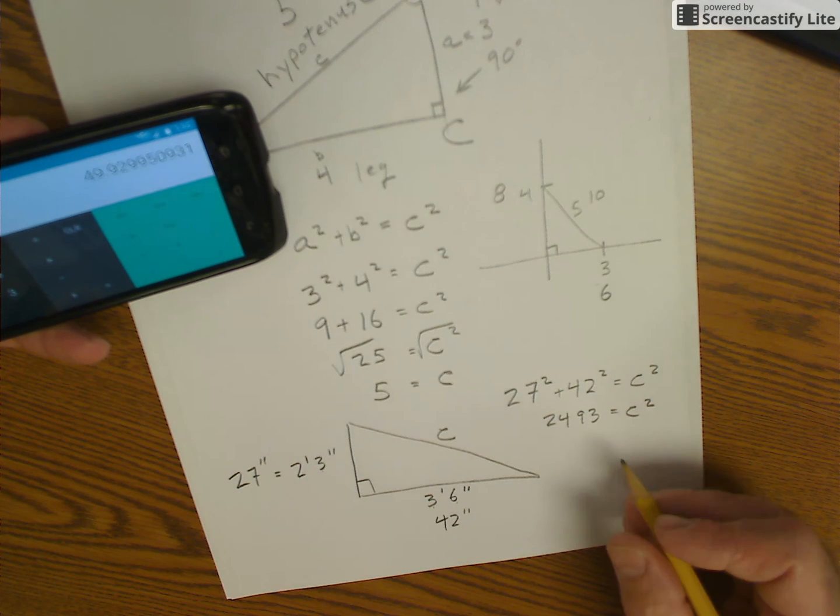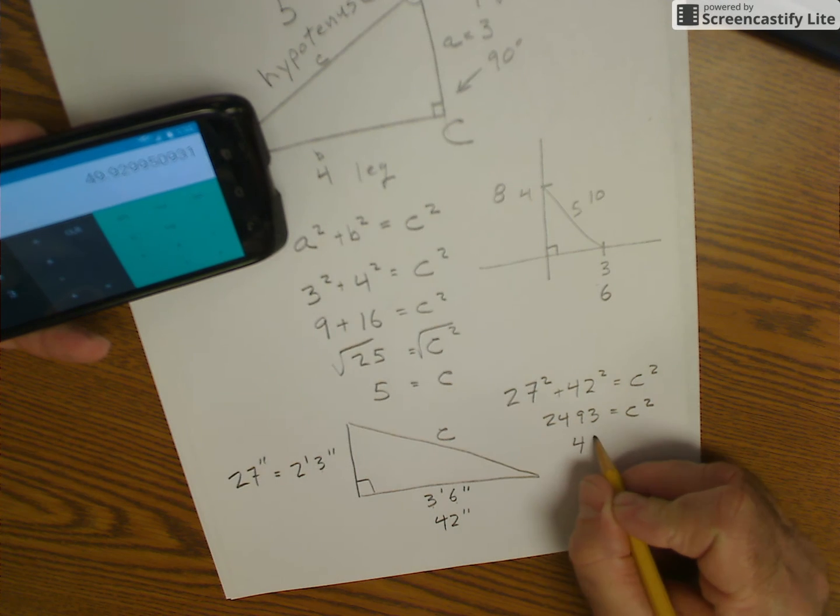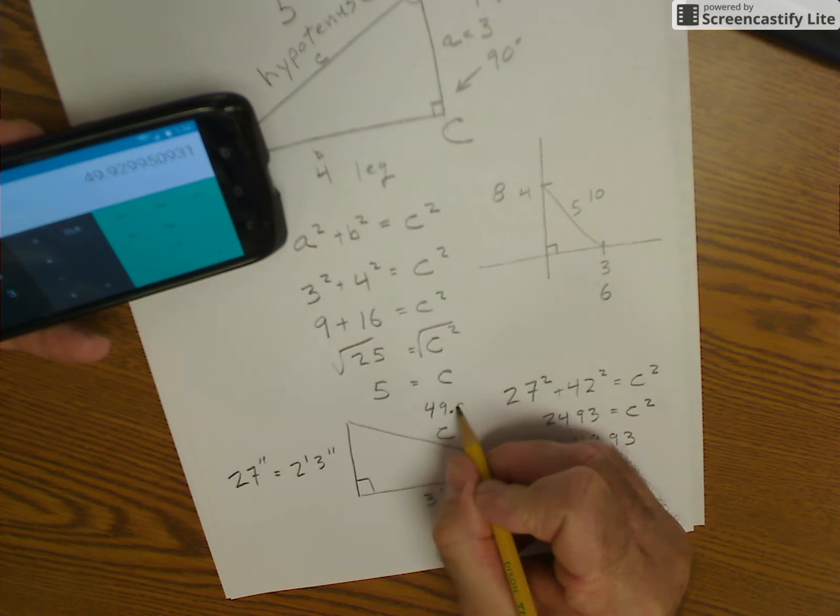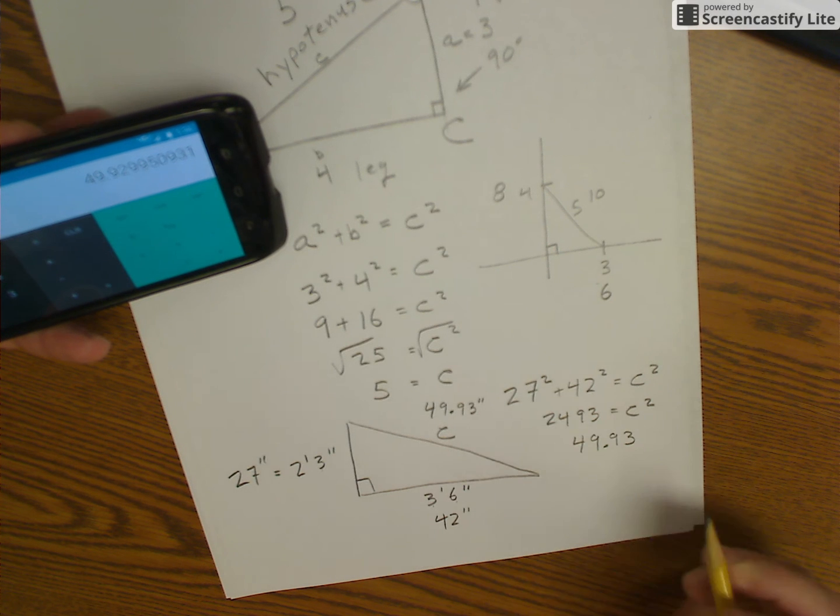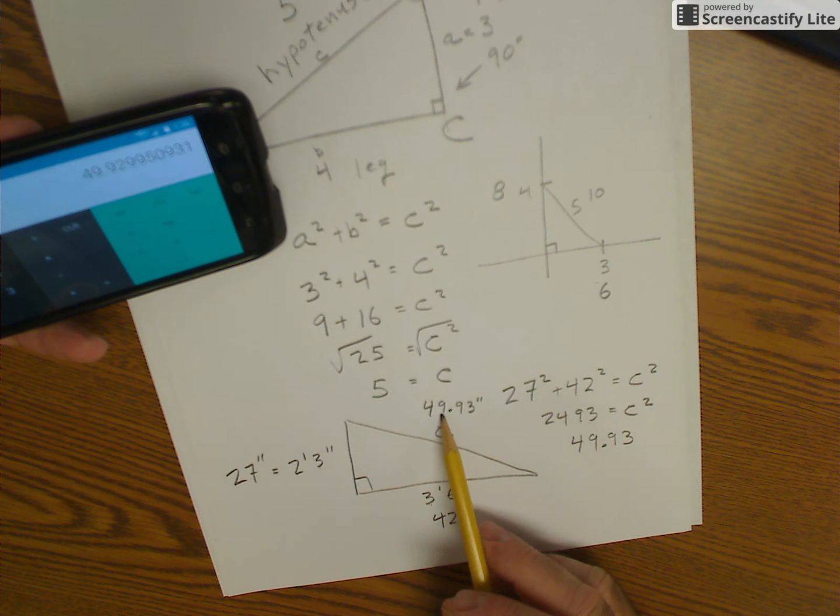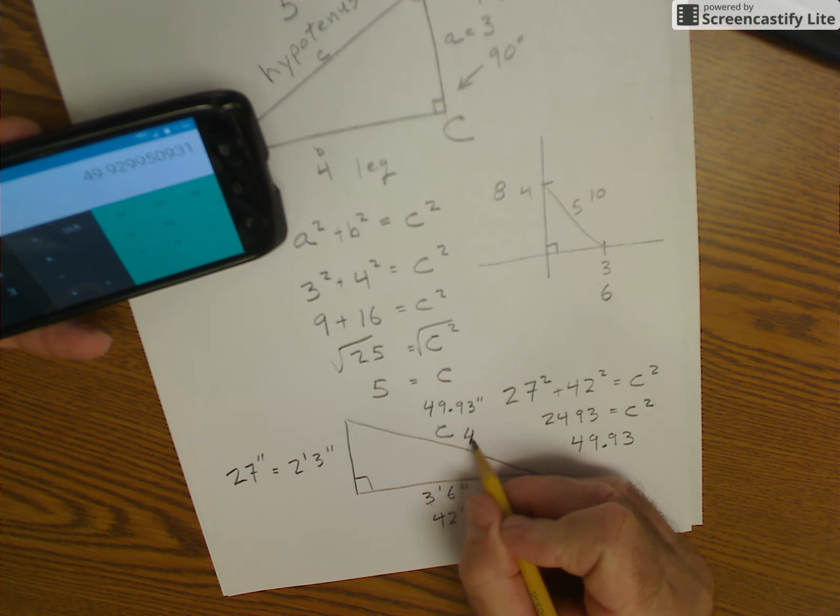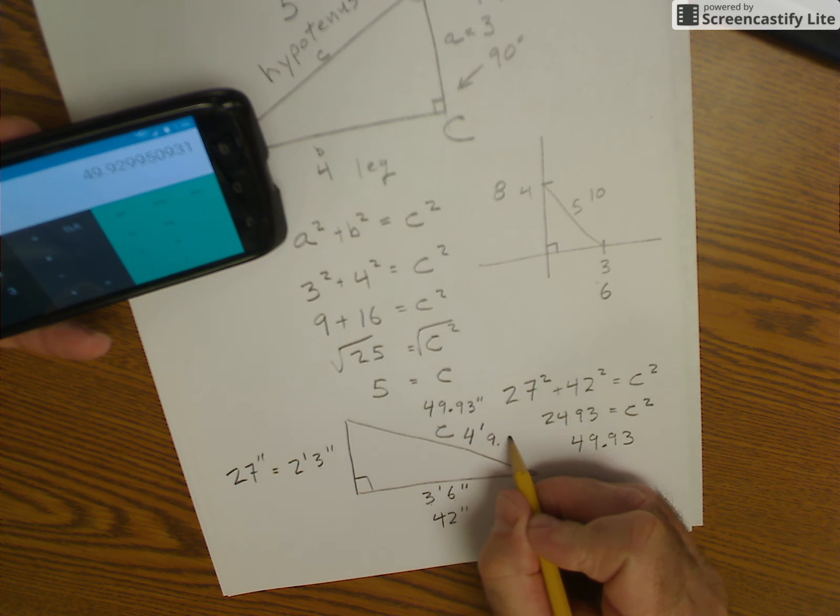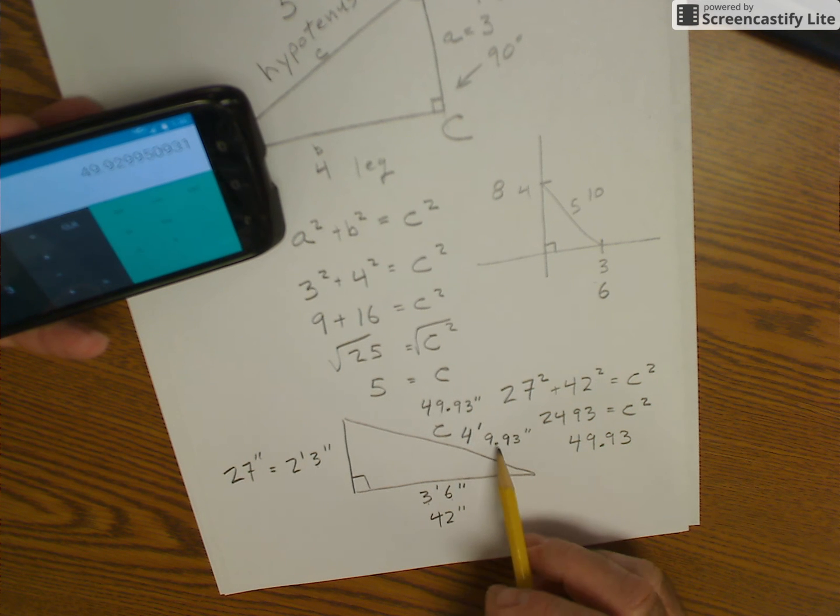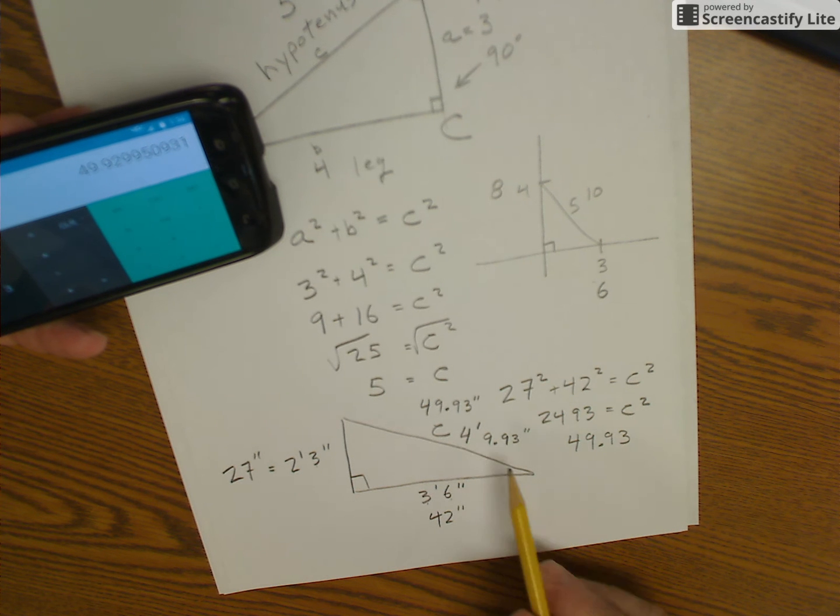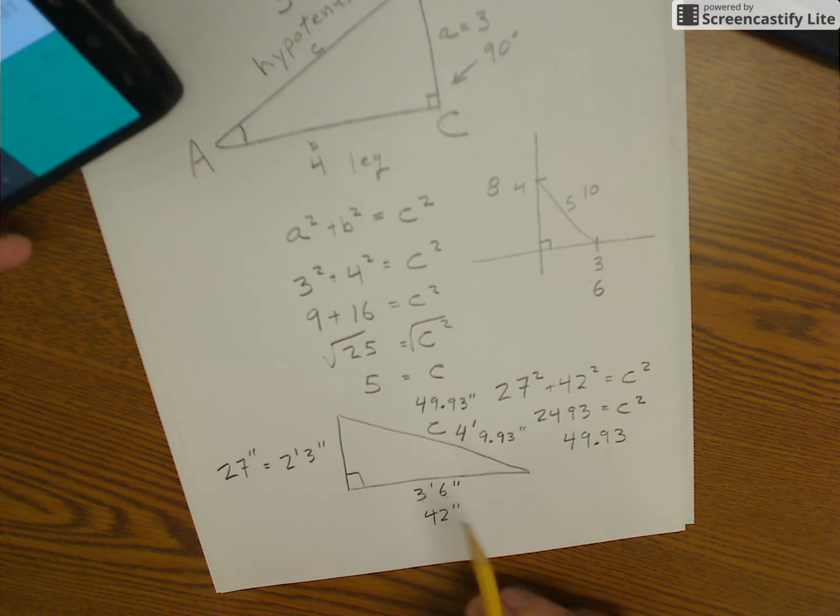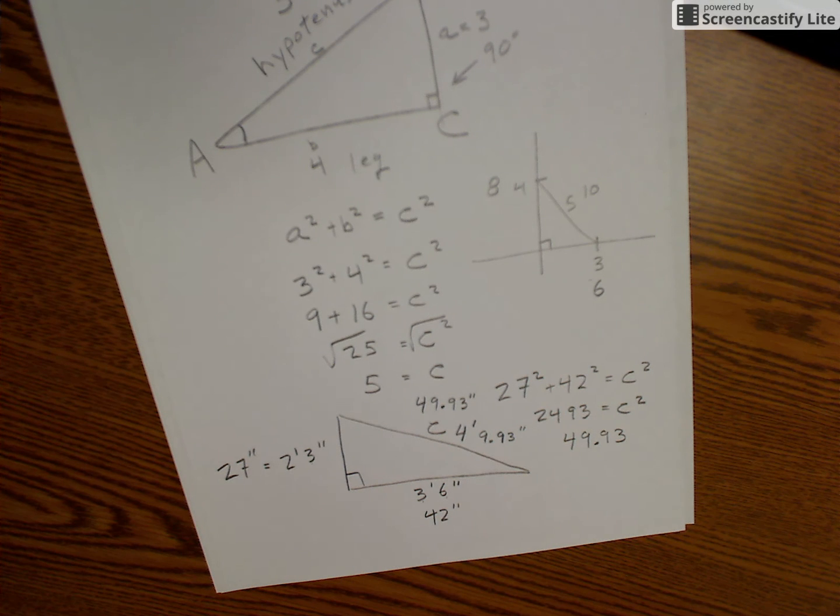And that gives me 49.93. So this is going to be 49.93 inches. And I could convert that back into feet. I know that 12 times 4 is 48. So this would be 4 feet. And then 9.93 inches is, it's almost 15 sixteenths. So 4 foot 9 and 15 sixteenths of an inch or so. Okay, so that's the Pythagorean Theorem, Chapter 12.